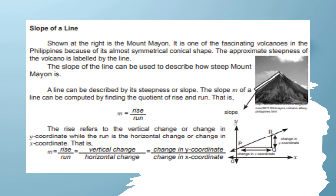Slope of a line: Shown here is Mount Mayon, one of the fascinating volcanoes in the Philippines because of its almost symmetrical conical shape. The approximate steepness of the volcano is labeled by a line. The slope of a line can be used to describe how steep Mount Mayon is. A line can be described by its steepness or slope. The slope m of a line can be computed by finding the quotient of rise and run — that is, m equals rise over run, which equals vertical change over horizontal change, which equals change in y over change in x.